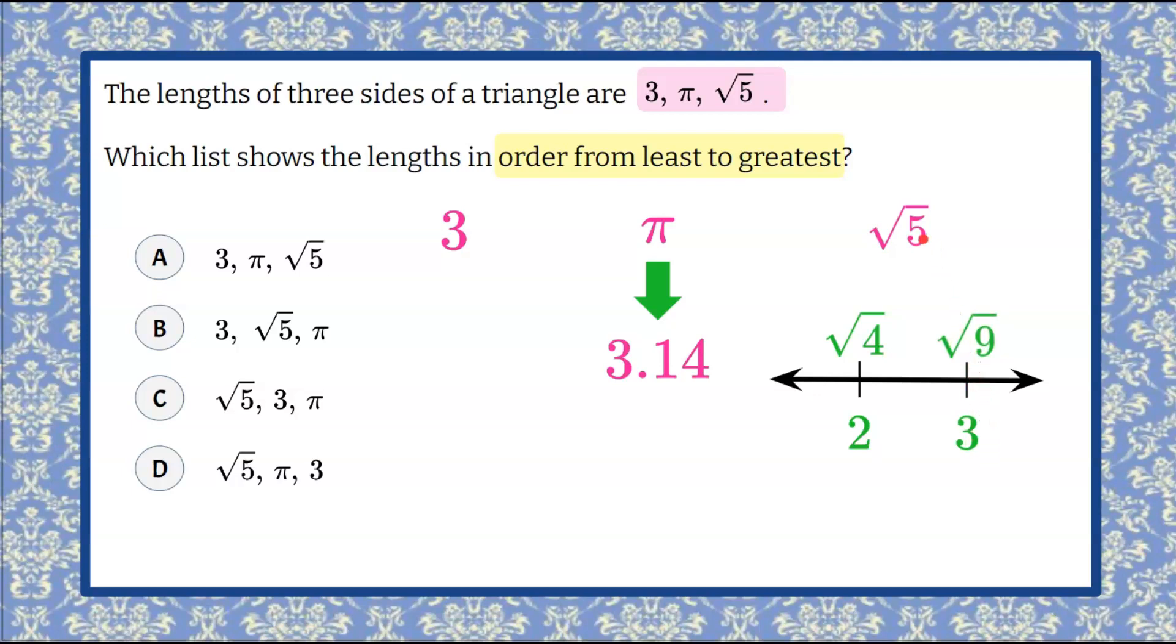So we can see that the square root of 5 is just a little bit bigger than 2 but smaller than 3. So we can say that it's 2 point something which means that this is our smallest number because it's going to be less than 3.